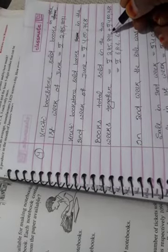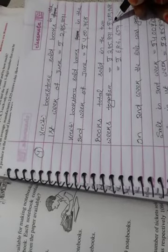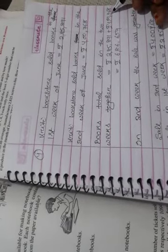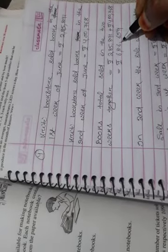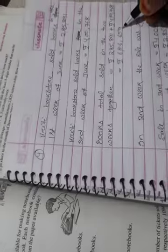Books total sold in the two weeks together is equal to Rs. 2,85,891 plus Rs. 4,768 is equal to Rs. 6,86,659.